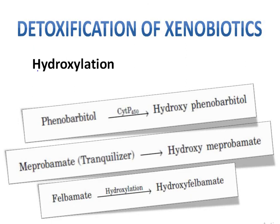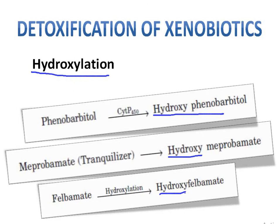A similar hydroxylation process can happen with different xenobiotic compounds. For example, phenobarbital through cytochrome P450 is converted into hydroxyphenobarbital — the hydroxyl group is added to the xenobiotic compound. Because of this addition of the hydroxyl group, the toxicity of the xenobiotic compound is reduced.